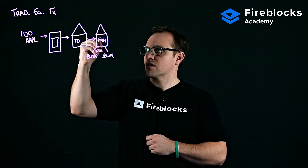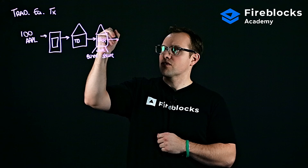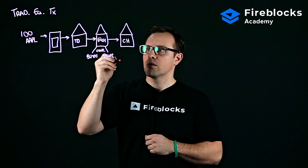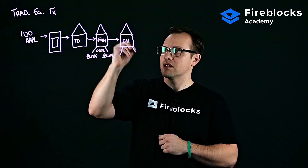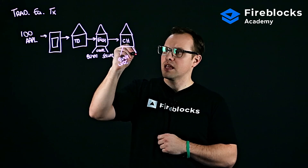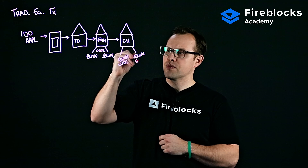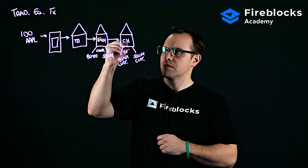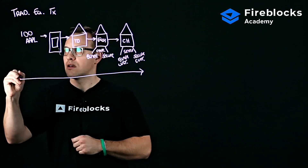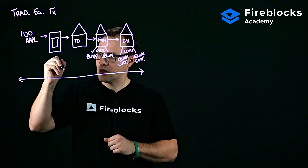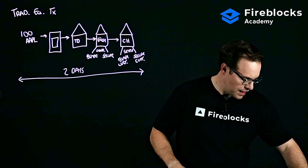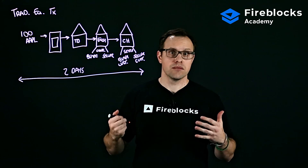The exchange will then send the order details to the clearing house, which will settle the trade and send settlement instructions to the buyer's custodian and the seller's custodian. This settlement process in general takes about two days, or T plus two.